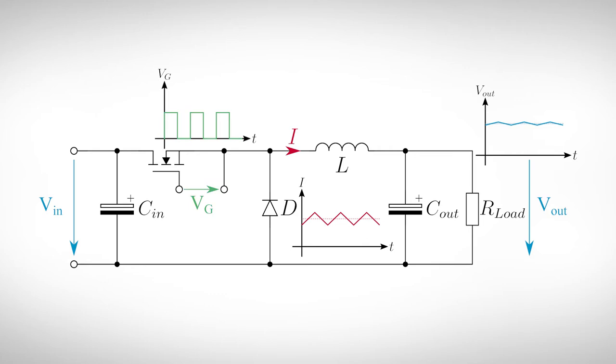Also, we treat the inductor as ideal, which means that its ohmic resistance is zero. The goal is to control the gate of the transistor in a way that the output voltage holds its predefined value, regardless of the load.